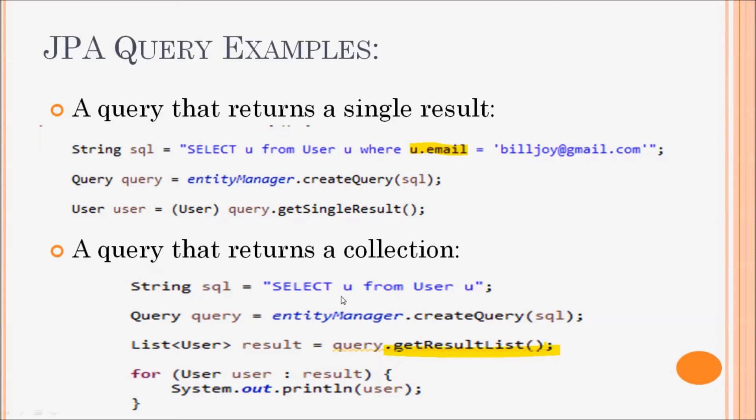This code executes the query that retrieves all rows from the table user and returns a result as a collection of a list of mapped user objects. It's very cool, isn't it?